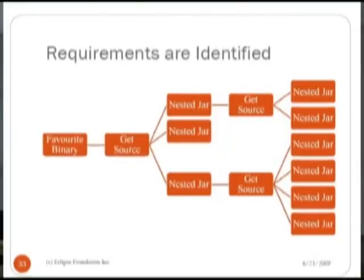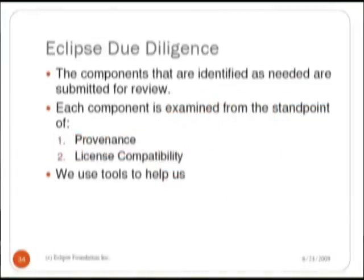Once we've done that, at each level of the nesting tree we set out and do due diligence on each of those individual components. When we do our due diligence, we really look at a project from two perspectives. The first is provenance, sometimes referred to as pedigree, and the second is license compatibility or suitability. And we have tools that help us as well.